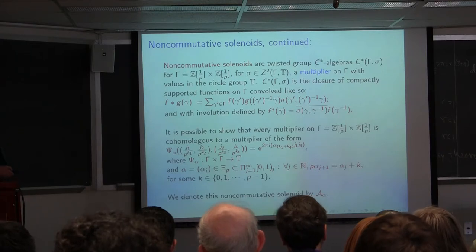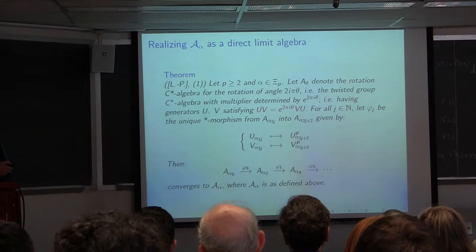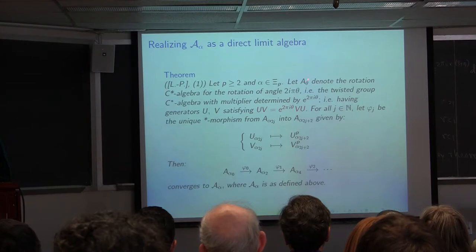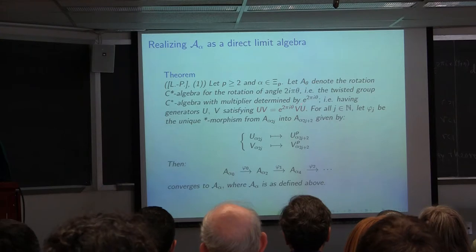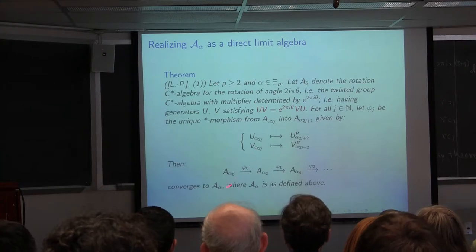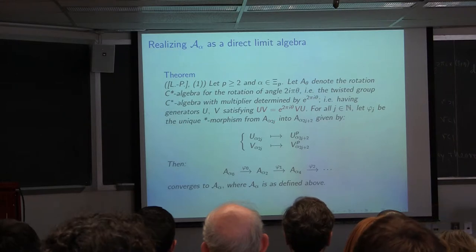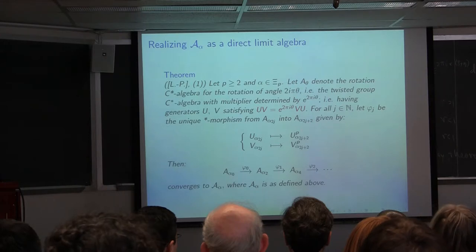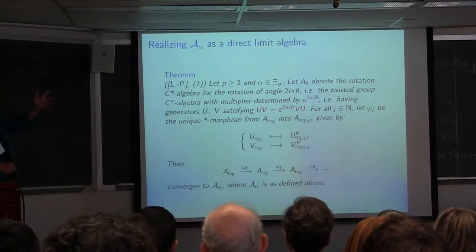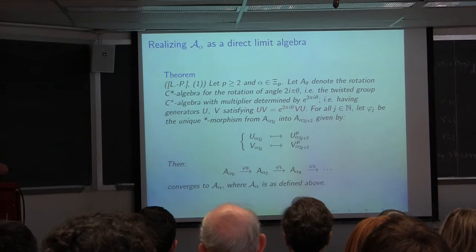This non-commutative solenoid, call it A_alpha, turns out — not surprisingly, since the groups are direct limits of Z × Z — to be writable as a direct limit. In fact, the non-commutative solenoids can be written as direct limits of rotation C*-algebras A_{alpha_j}, where the algebras don't have to be irrational. The embedding that takes A_{alpha_{2j}} into A_{alpha_{2j+2}} goes on the even indices, though you can choose any embedding you want and start as far out as you like — that's the beauty of direct limits.